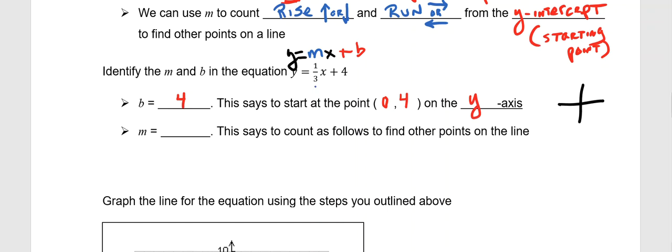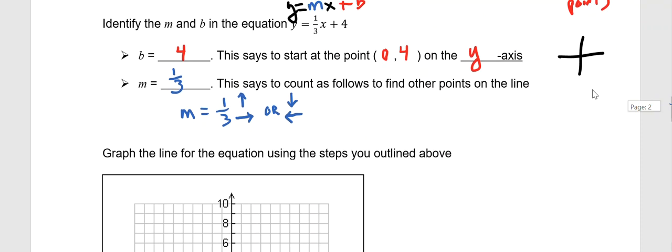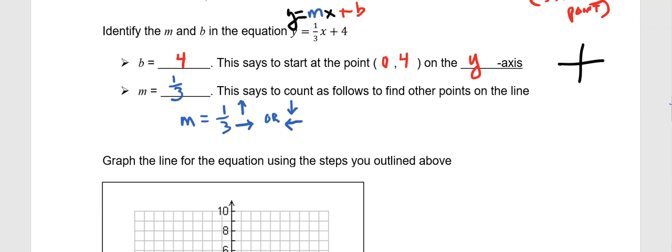The m value, or our slope, is that one-third. Now that says to count as follows. So m equals one-third, that means we've gotten pretty good at this. That means we count a rise, since it's positive one, up, matched with a run of positive three that's to the right. Or, we can work in the opposite direction, so we can go down with our rise, but we need to make sure we pair that up with moving left for the run.